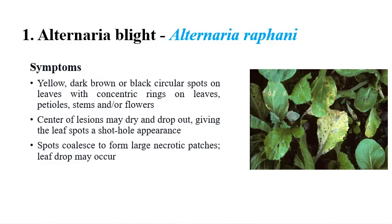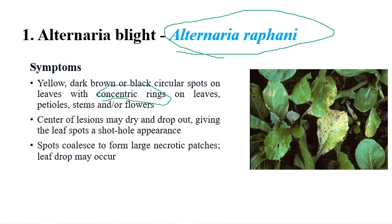The first one is Alternaria blight, caused by Alternaria rafani. As we have seen in previous diseases, the most prominent symptom of Alternaria blight is concentric rings. If you see the leaves, in later stages we can clearly observe concentric rings on leaves. That is the most important and diagnostic symptom of Alternaria blight.